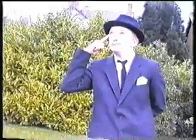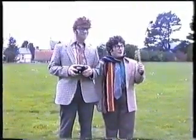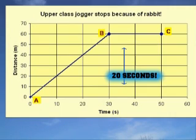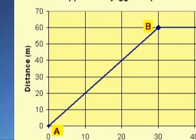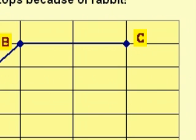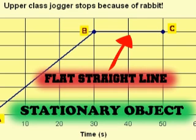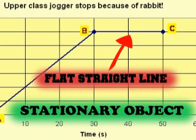He seems to have stopped. Our friend didn't move for 20 seconds. This is easily shown on a distance time graph — the distance hadn't changed, it was still 60 meters, so we simply plotted point C. And look — it's a flat straight line, it's horizontal. The object is stationary, it's not moving. On a distance time graph, a flat straight line means the object has stopped.